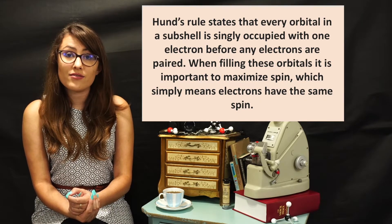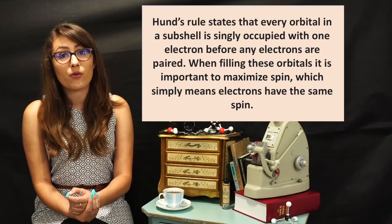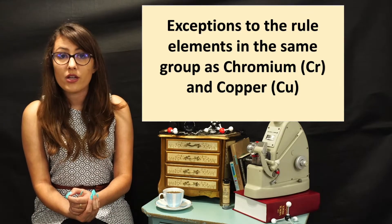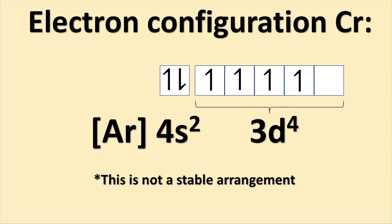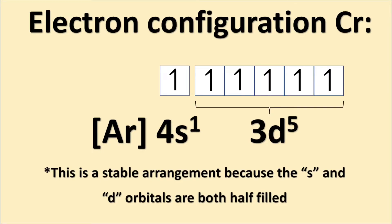With this in mind, we can apply this to elements in the same group as both chromium and copper. Chromium, if you were to follow the Aufbau principle, would be argon-4s2-3d4. However, because the 4s and 3d orbitals are so close in energy, a more stable arrangement would be argon-4s1-3d5, because this has two half-filled orbitals instead of a full s orbital and a partially-filled d orbital, making this a more stable arrangement.